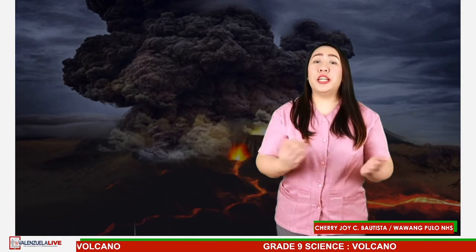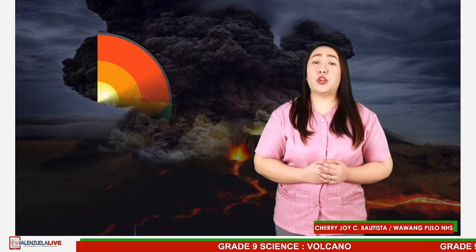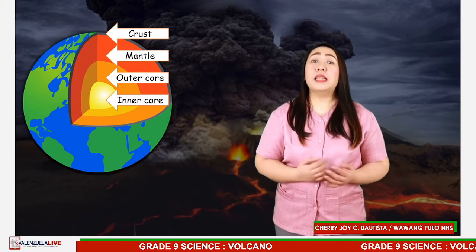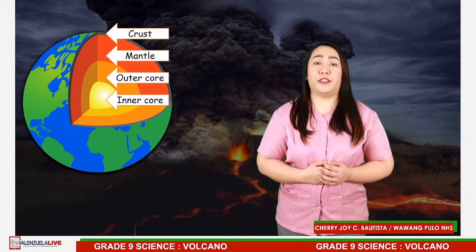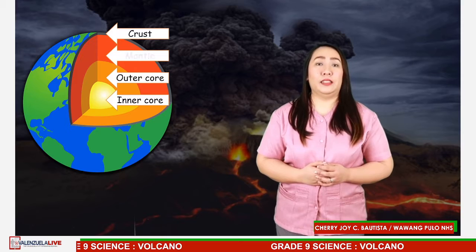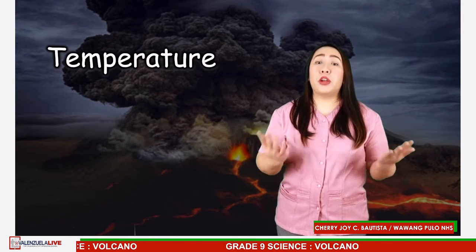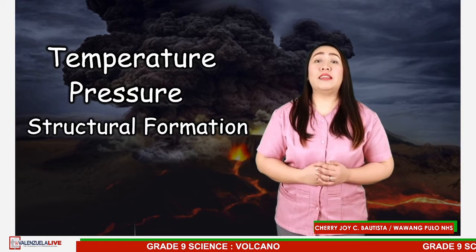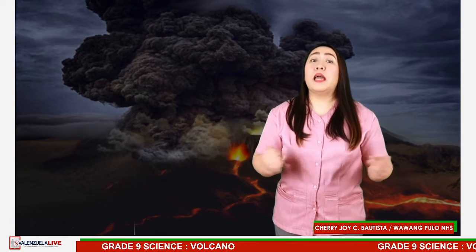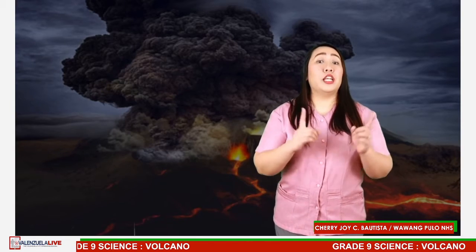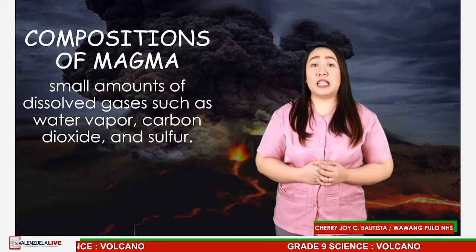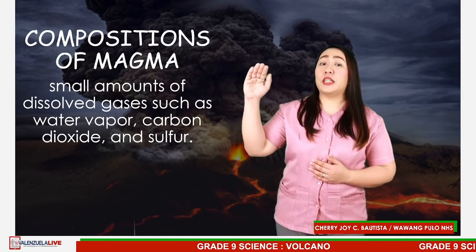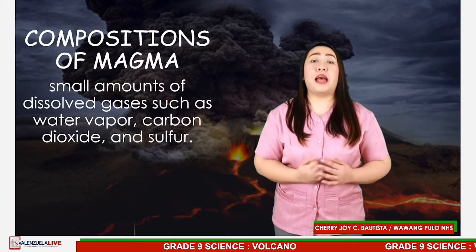Let's start first with the lifeblood of every volcano: magma. During your previous years, you learned that our Earth is composed of three layers — the crust, mantle, and core. Magma originates in the lower part of the Earth's crust and in the upper portion of the mantle. Differences in temperature, pressure, and structural formation in the mantle and crust cause magma to form in different places. Like solid rock, magma is a mixture of minerals. It also contains small amounts of dissolved gases such as water vapor, carbon dioxide, and sulfur. The high temperatures and pressure under Earth's crust keep magma in its fluid state.